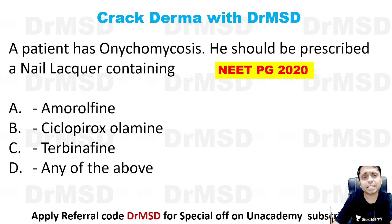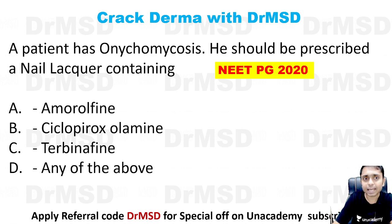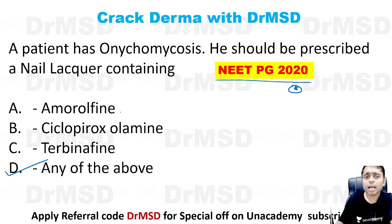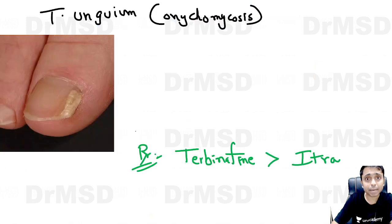This is today's question. A patient has onychomycosis — onychomycosis is nothing but fungal infection. He should be prescribed a nail lacquer containing which agent? This is a NEET PG-2020 exam question. If you have answered any of the above, your answer is right. Because Amorolfine, Ciclopirox olamine and Terbinafine — all of these agents can be used in the onychomycosis patient.